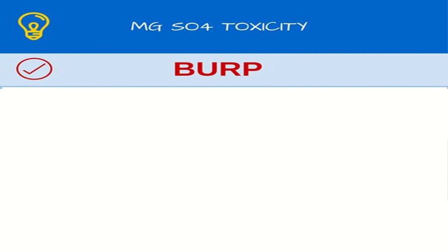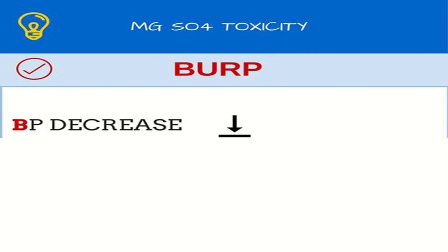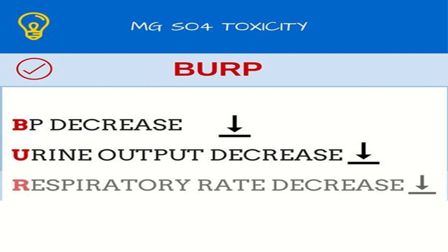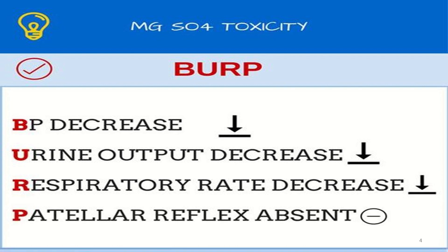Here we have a mnemonic to remember magnesium sulfate toxicity, and that is BURP. B stands for decreased blood pressure. U is for urinary output decreased. R stands for respiratory rate decreased. P stands for patellar reflexes absent.